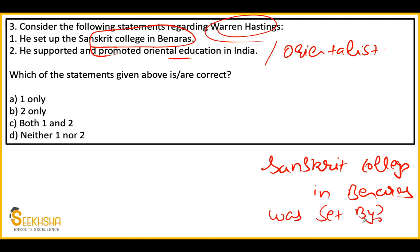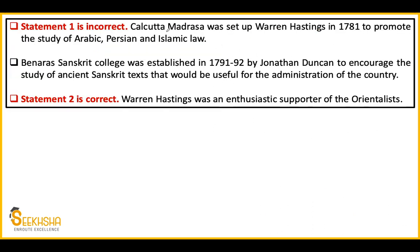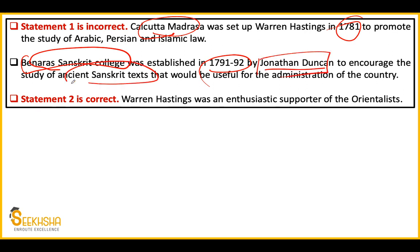The answer is option B — only statement two is correct. Statement one is wrong because Warren Hastings did not establish the Sanskrit College. Warren Hastings was indeed an orientalist — we discussed anglicists and orientalists in the last class. Statement one is incorrect because Warren Hastings in 1781 established the Calcutta Madrasa, which was focused on study of Indian languages — Arabic, Persian, and Islamic law. Regarding Benaras Sanskrit College, it was established in 1791-92 by Jonathan Duncan and was focused on ancient Sanskrit.